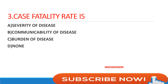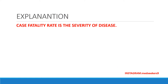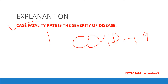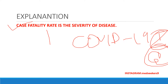Next question: what is case fatality rate? Option A: severity of a disease; option B: communicability of a disease; option C: burden of a disease; option D: none. Case fatality rate is severity of a disease. Also, what is the case fatality rate of COVID-19 in India and globally? Case fatality rate is generally used as a measure of disease severity and often used for prognosis — predicting disease scores or outcome.